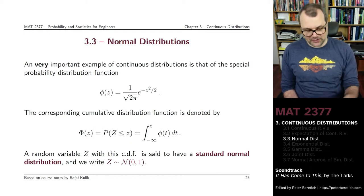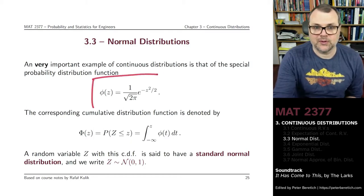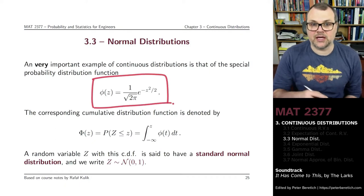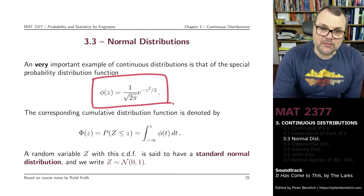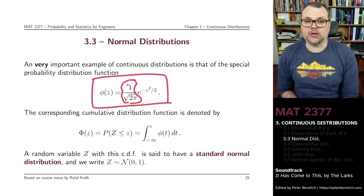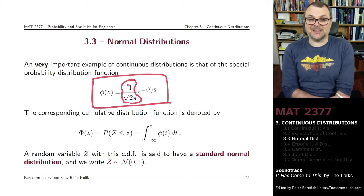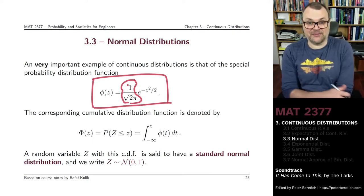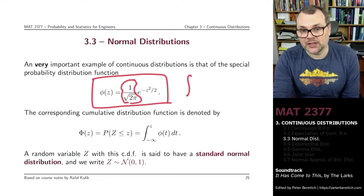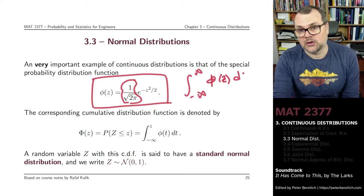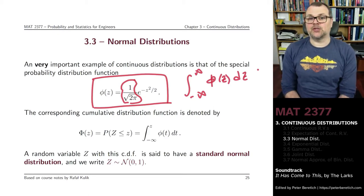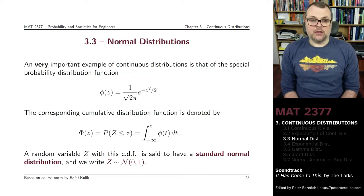It's given by this form. We'll see a graph of what that looks like in a second. You might be puzzled by this term here: 1 divided by the square root of 2π. This is just to make sure that this is indeed a probability density function, to ensure that the integral over minus infinity to infinity will be equal to 1.